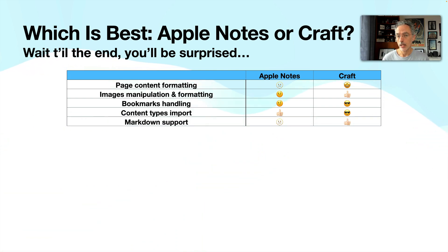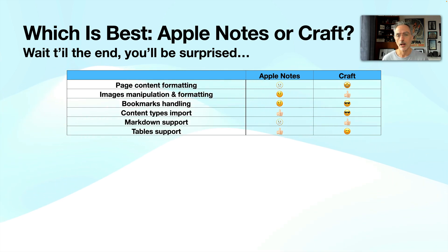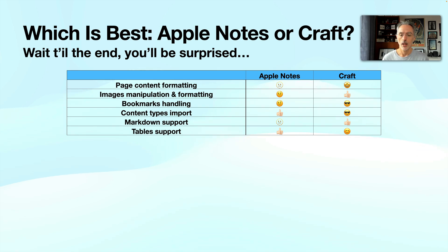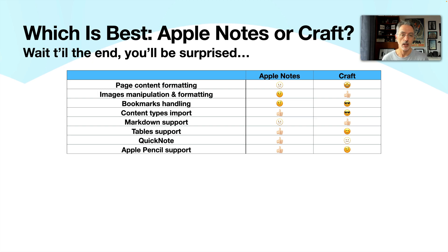For table support, I'd give an edge to Kraft because it supports calculations and offers more flexibility for table manipulation. However, Kraft limits tables to 100 rows, which is a limitation that makes Apple Notes a bit better in that respect. Quick Notes is fully integrated in Apple Notes, something Kraft doesn't support. Apple Pencil support is also way better on Apple Notes — in Kraft you can create a block with some scribble, but there's no added value of using an Apple Pencil with Kraft.